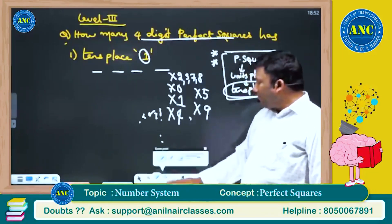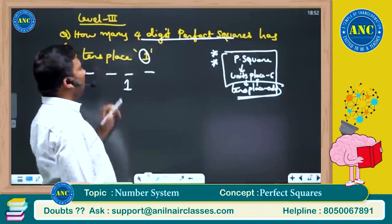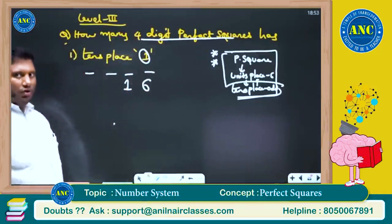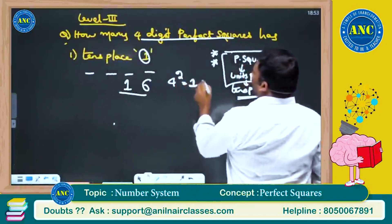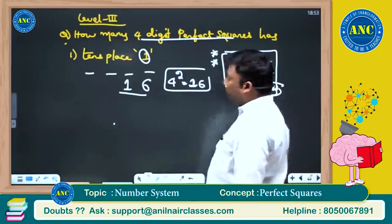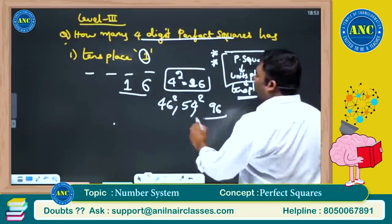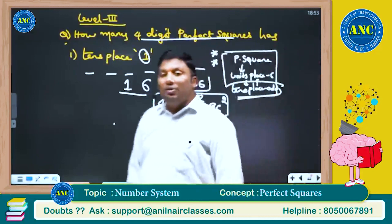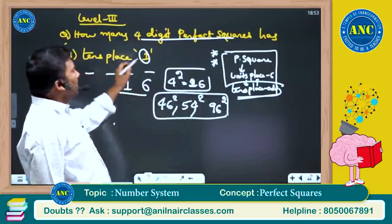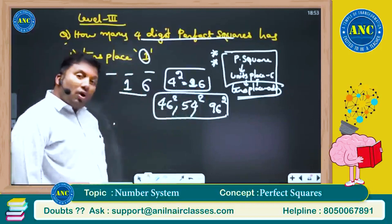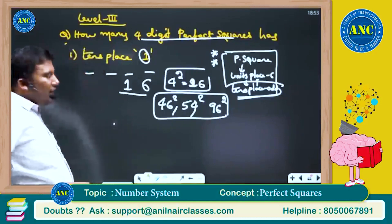Let us solve this problem. How many 4-digit perfect squares have tens place equal to 1? Tens place is 1, which is an odd number, so it is only possible when the units place is 6. The last two digits are 16. Since 4²=16, the smallest natural number whose square ends in 16 is 4. Then we get 4, 50−4=46, 50+4=54, 100−4=96. That gives us 3 numbers.